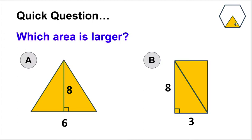Before we start, let's talk about these two yellow shapes: a triangle and a rectangle. Which area is larger? Pause the video and think about it. Hopefully you remember that the area of a triangle is found by doing base times height divided by two. If I go six times eight divided by two, I get 24.